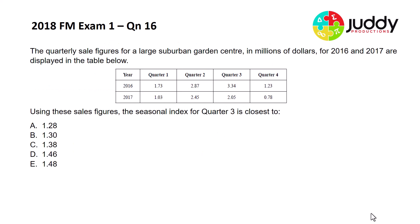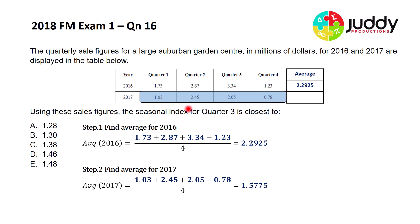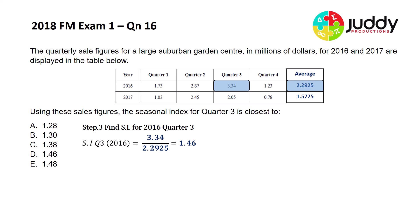Moving on to 2018 Further Maths exam one, multiple choice, question 16. The quarterly sale figures for a large suburban garden center in millions of dollars for 2016 and 2017 are displayed in the table. Using the sales figures, the seasonal index for quarter three is closest to. First, work out the average for the four quarters in 2016: adding those four values and dividing by four gives an average of 2.2925. For 2017, the same process gives an average of 1.575. Then the seasonal index for 2016 quarter three is 3.34 divided by 2.2925, giving 1.46.